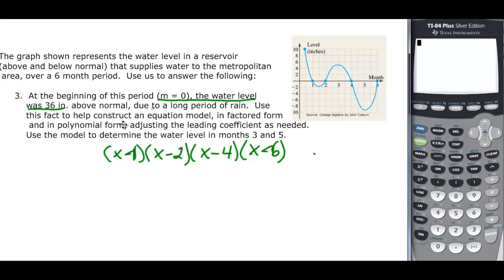Here is where this comes in. We do know that it is 36 inches when the m, or in our case the x, is zero. So if I plug zero in here, zero minus one, zero minus two, zero minus four, and zero minus six, we're going to have 36 equals, if you multiply all that out you get 48a, and when you divide 36 by 48 you end up with three fourths.